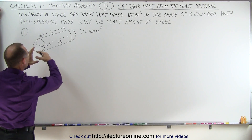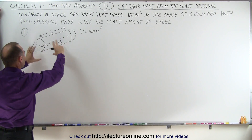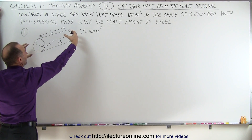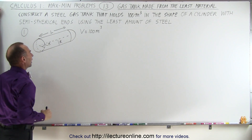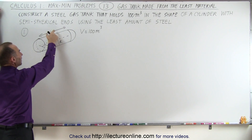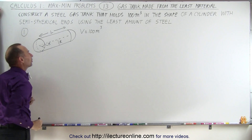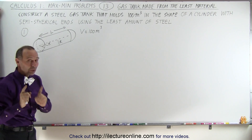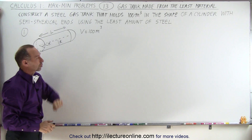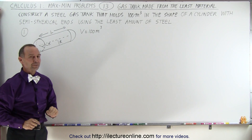First of all, we are going to draw a diagram, and so we have the cylinder with the two semispheres on either end. We don't know what the length is, we don't know what the radius is, but we do know that the volume is 100 cubic meters.